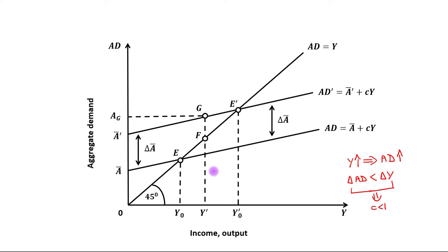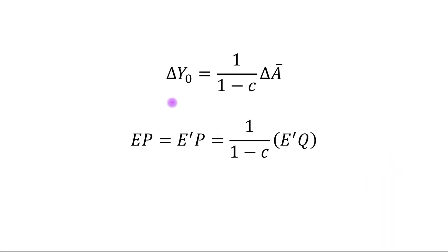The change in income required to achieve this new equilibrium point is E dash P, where E dash Q is the change in A-bar. The change in equilibrium level of output equals 1 upon (1 minus MPC) times the change in A-bar. In our figure, the change in equilibrium level of output is E dash Q.